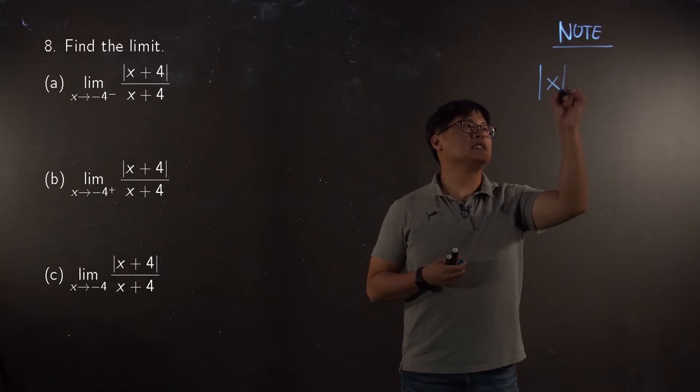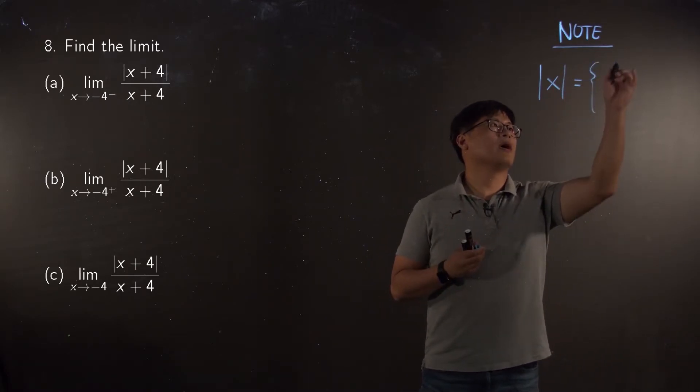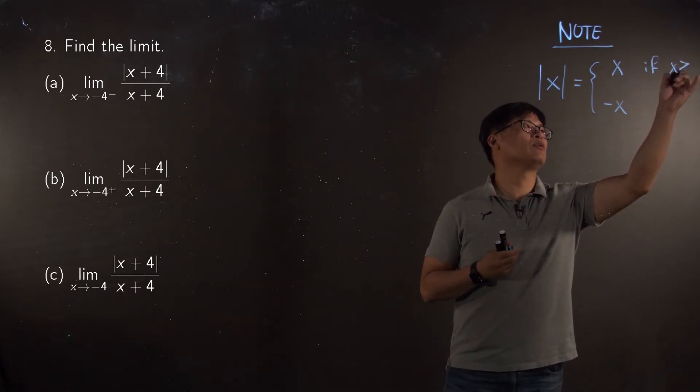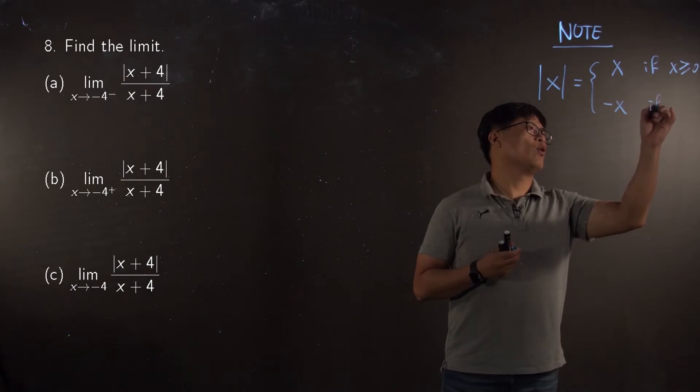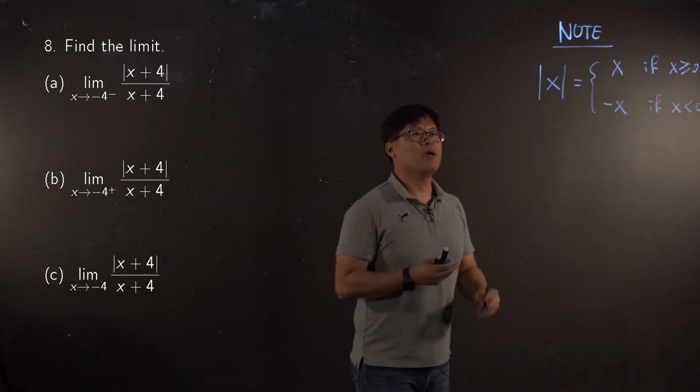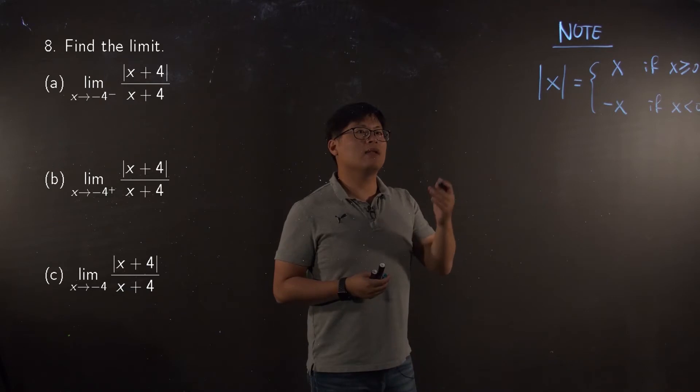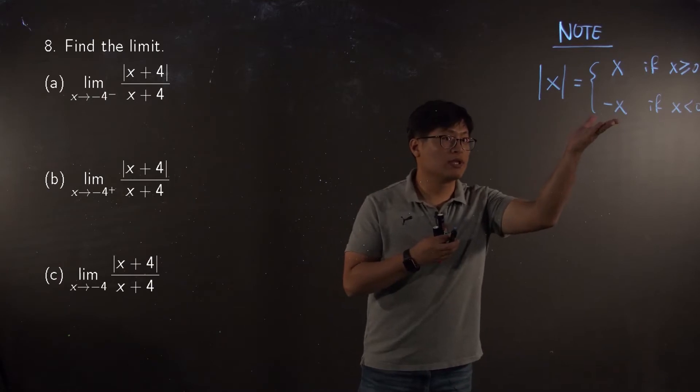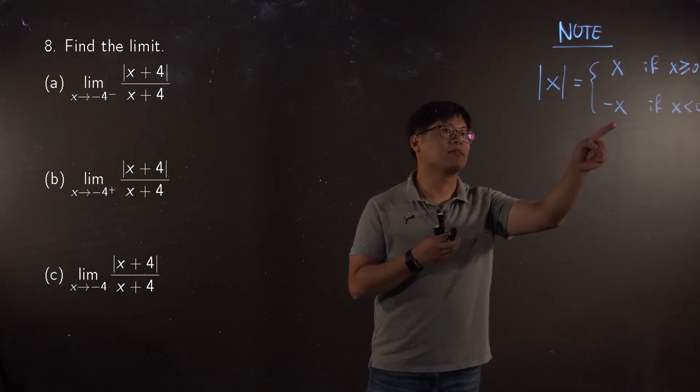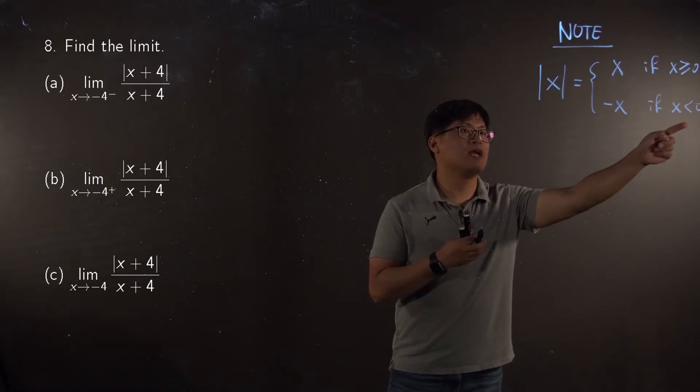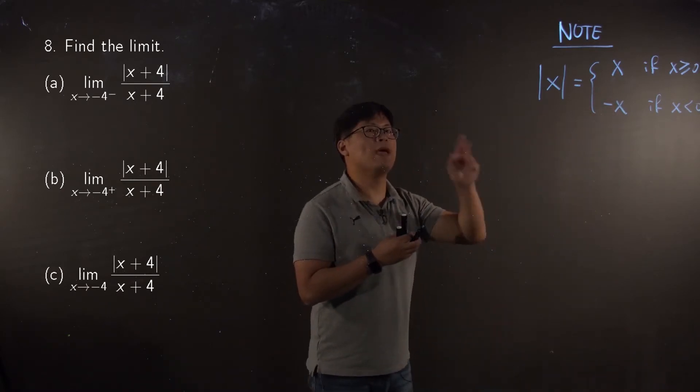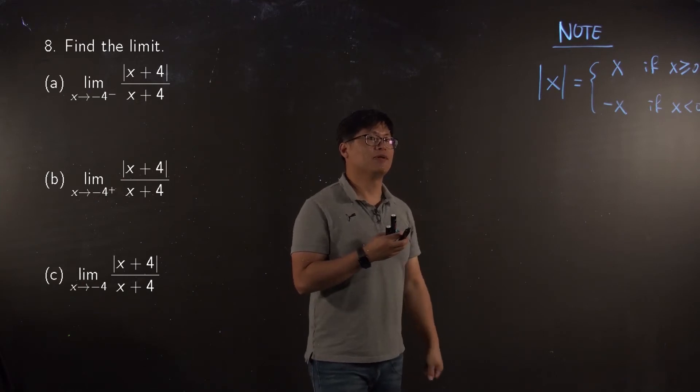Absolute value of x is two cases: x or negative x. When x is positive or equal to 0, it is just x. When x is negative, it is negative x. But wait a minute, it's a little bit awkward, right? Because absolute value always gives you positive, but it looks like negative. But keep that in mind, this is not negative. Because your x itself is already negative. Negative number times another negative is positive, so this is positive. Actually this is the way to make your negative number as positive number.